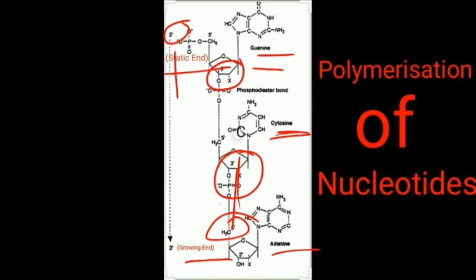The polymerization of nucleotides always takes place in the direction 5' to 3', since the 3' end of one nucleotide attacks the 5' end of the next nucleotide. This 3' end is the growing end, and the direction of polymerization is from 5' to 3'. You should always remember this.